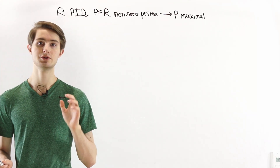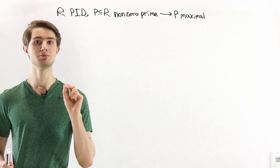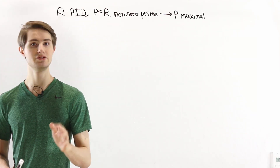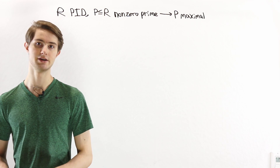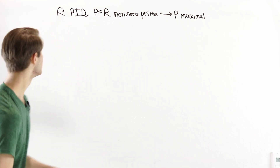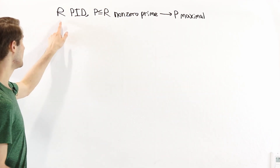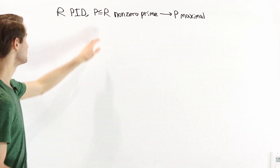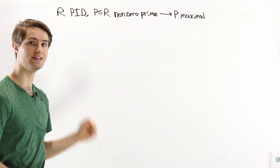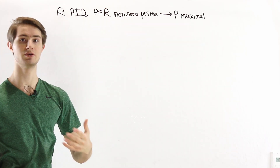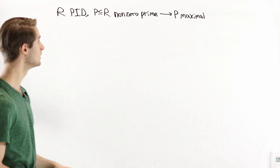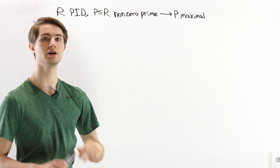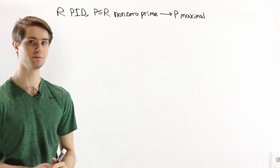We're going to prove that in a principal ideal domain, every non-zero prime ideal is maximal. Let's suppose we have some ring R that's a PID and we have some P in R which is a non-zero prime ideal. Our goal is to show that therefore P is maximal.